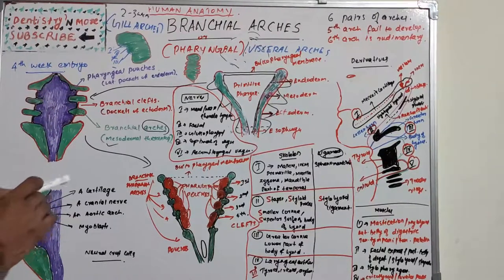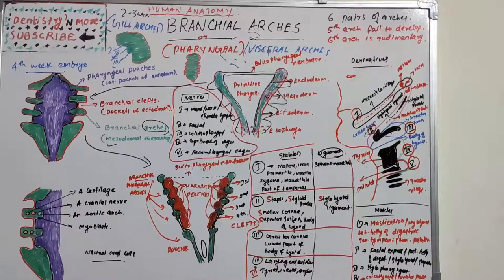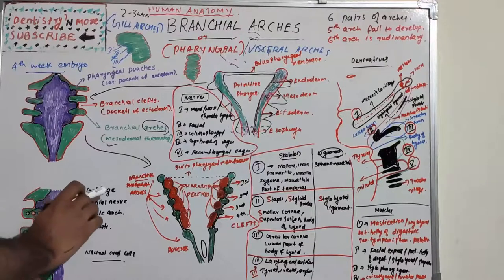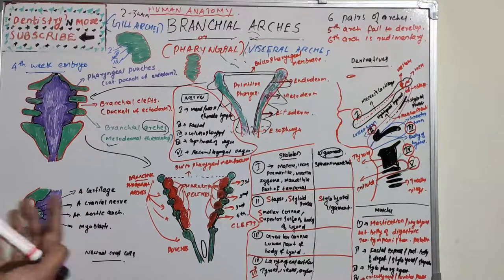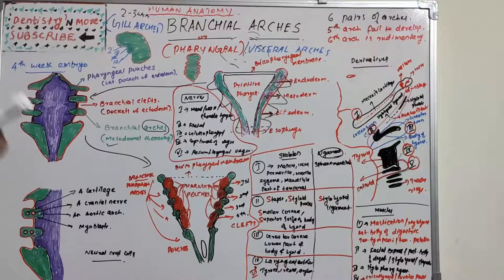Each arch consists of a cartilaginous element, a cranial nerve, an aortic arch, and myoblasts, which are basically neural crest cells. The cartilage gives rise to various bones; the cranial nerve supplies the muscles and other parts; the aortic arch provides vascular supply; and the myoblasts are primitive cells that later give rise to various muscles associated with each arch.